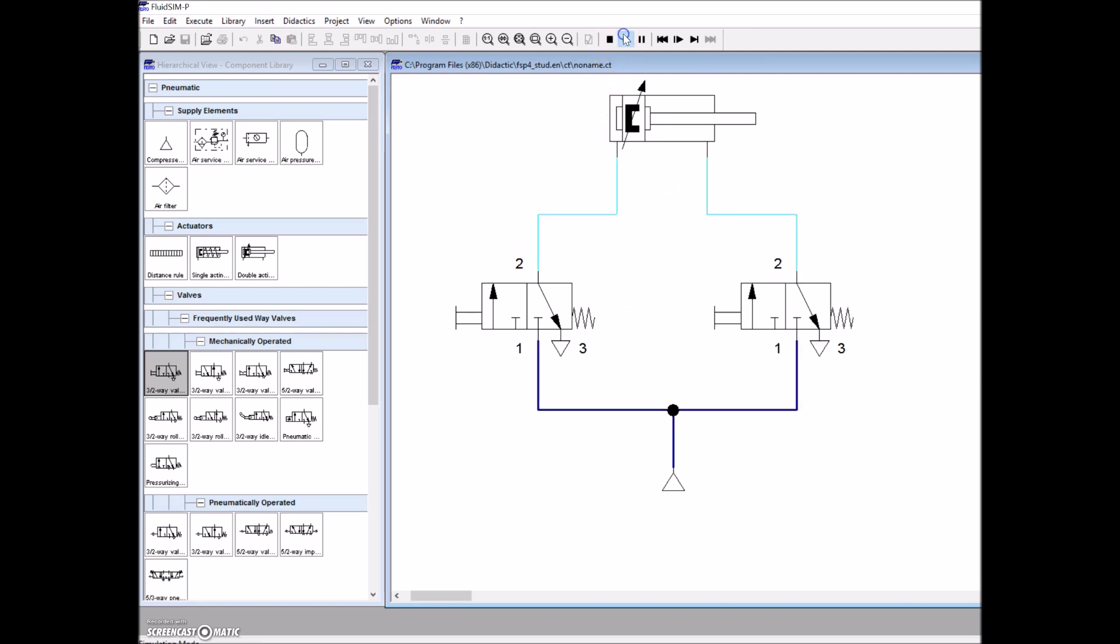We'll hit the play button. If we hit this, it should extend. Excellent. And this is going to retract. Beauty. Now remember that the air has to exhaust out, so when we extend it, the air that was in this cylinder is able to come down here, go down from 2, and exhaust out of 3.